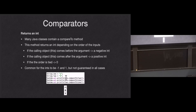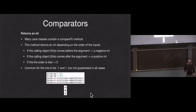For example, 'A'.compareTo('B') — A comes before B alphabetically, so it returns a negative integer. A compared with itself returns zero. And B as the calling object with A as the parameter returns a positive integer, because the calling object comes after the parameter.